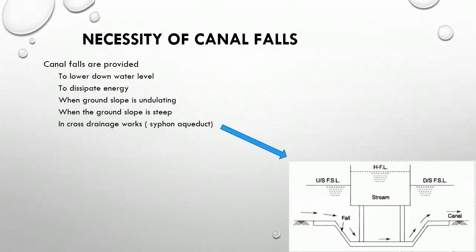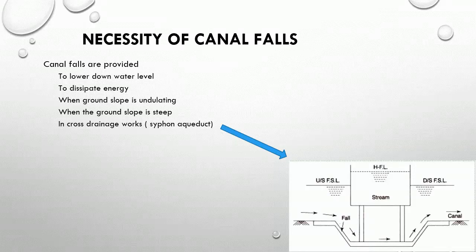Canal falls are provided to serve the following functions: to lower down water level, and to dissipate energy. They are provided when the ground slope is undulating, when the ground slope is steep, and in siphon aqueduct type cross drainage works, as shown in the figure.